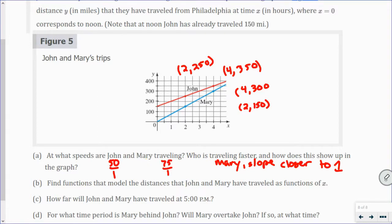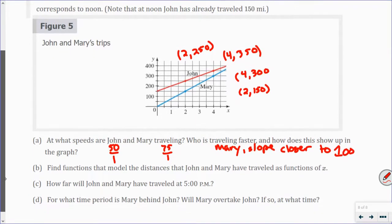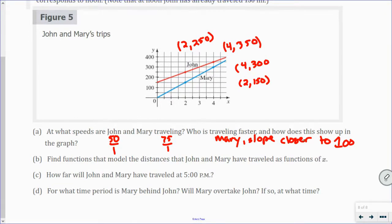Okay, so we said that closer to 100, her slope is steeper. It's a larger number. So, she's traveling much faster. Okay, so you could say slope is larger. Okay. Find functions that model the distance that John and Mary have traveled as functions of x. So, we're going to say John's equation, j of x equals 50x plus 150 because he started at 150. But Mary's equation, m of x equals 75x plus 0, but I don't have to put plus 0. So, those are the two equations.